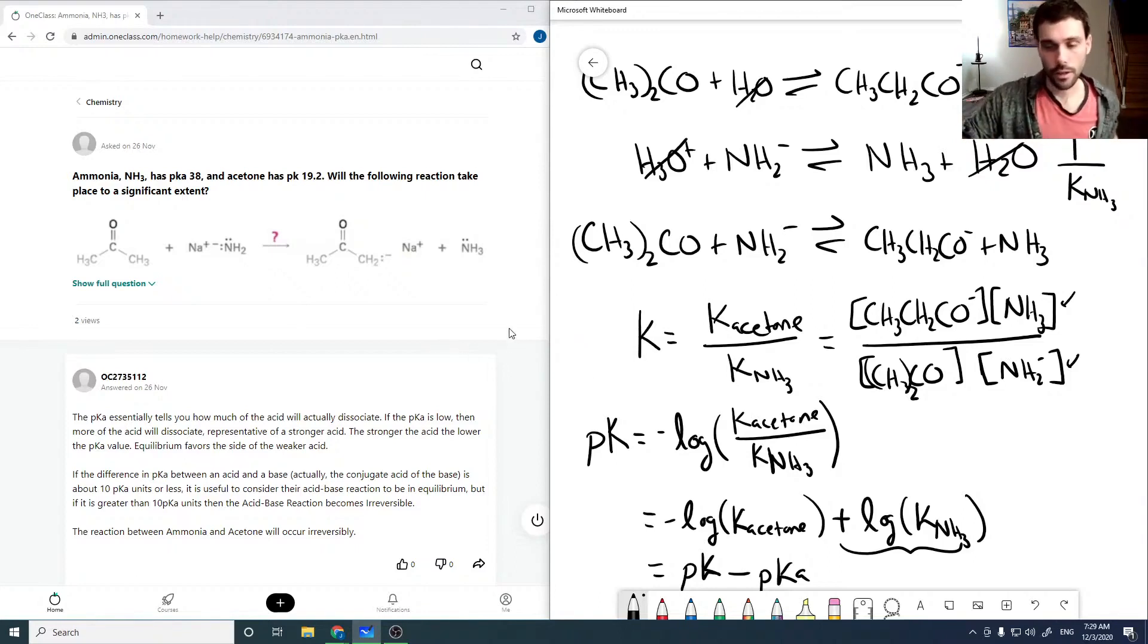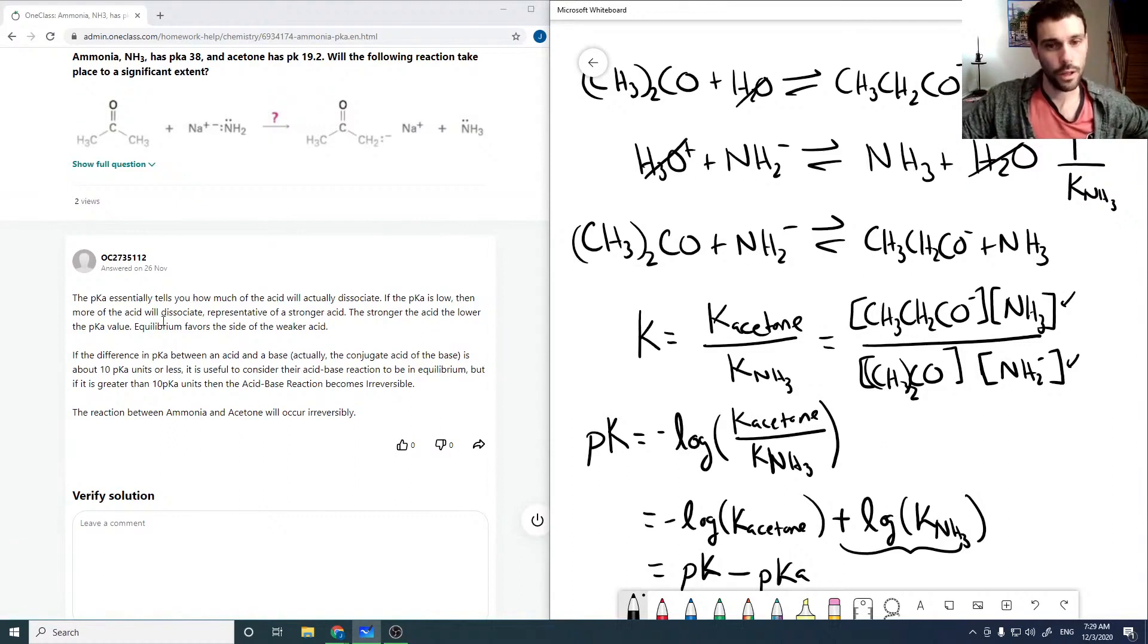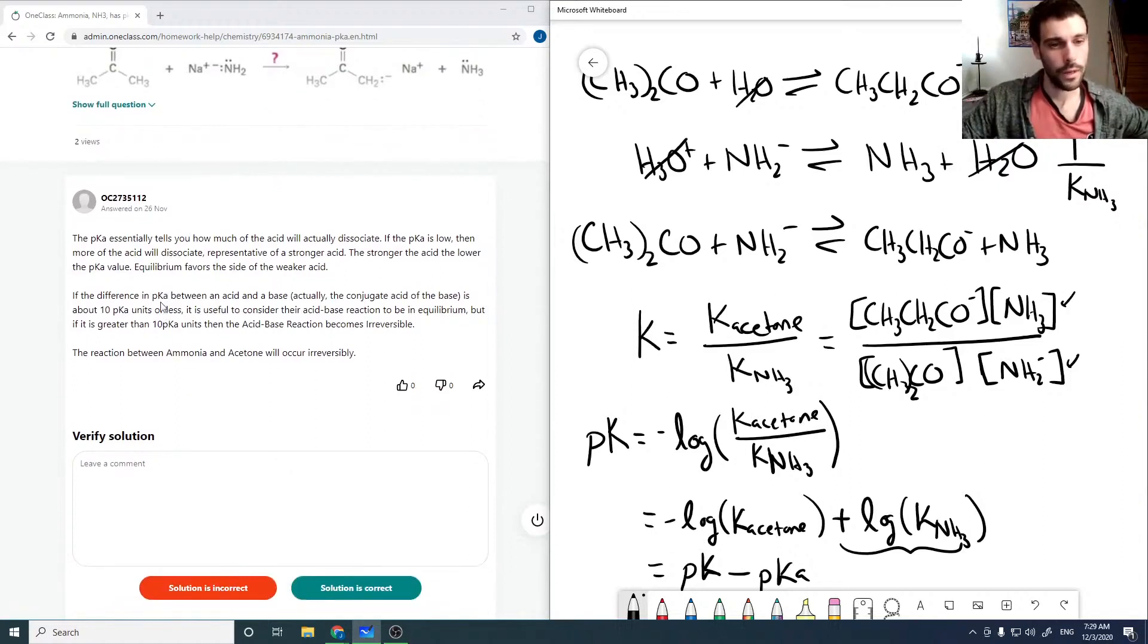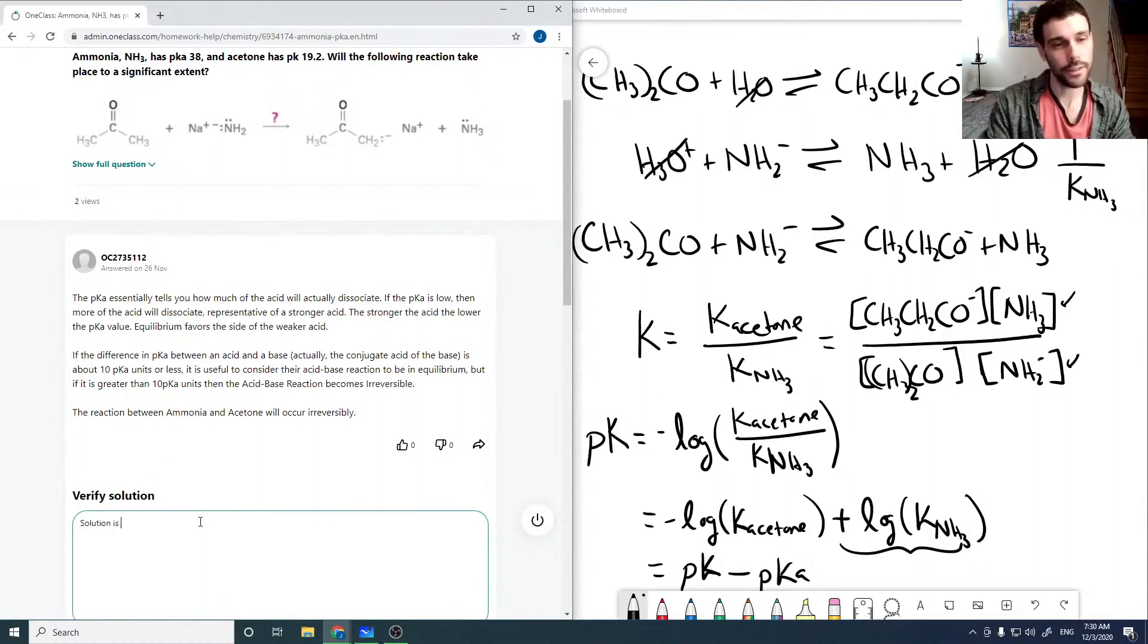So I hope you followed the logic there. Let's see here. The pK essentially tells you how much the acid will dissociate. If it's low, then more will dissociate, so you want a lower number. The stronger the acid, the lower. If the difference between an acid is about 10, it is useful to consider, but if it's greater than 10, it becomes irreversible. The reaction between ammonia and acid will occur irreversibly. So that's true. I suppose they just straight up took the difference and came up with that. I will say the solution is correct. I could use much more description to show exactly why. Well, I hope I gave plenty of description there and my steps were easily followed. So I will say it is technically correct.